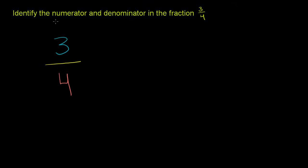Now, they want us to identify the numerator and the denominator. So the numerator is just the number on top. So the numerator is the 3 right there. And then they want us to find the denominator. The denominator is just the number on the bottom. It's the 4.